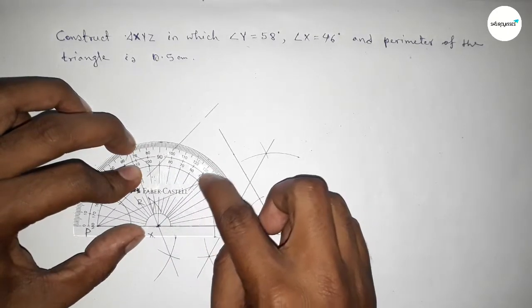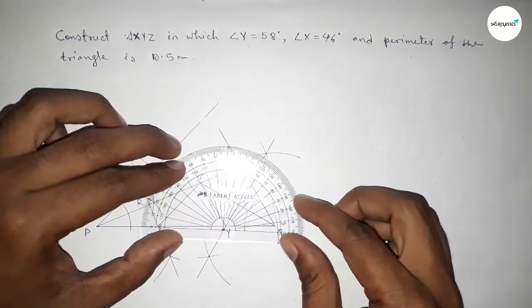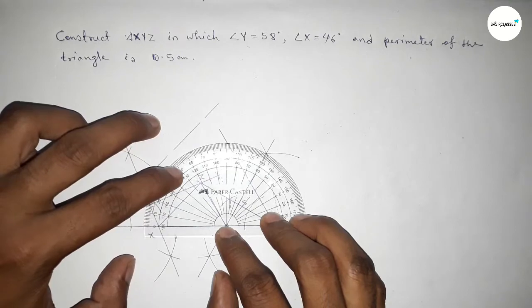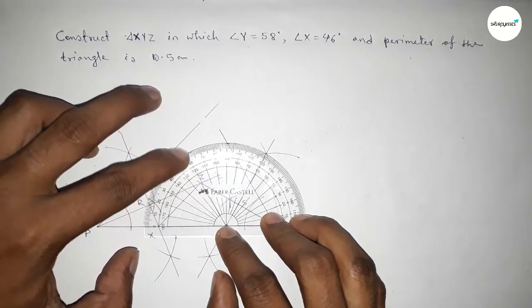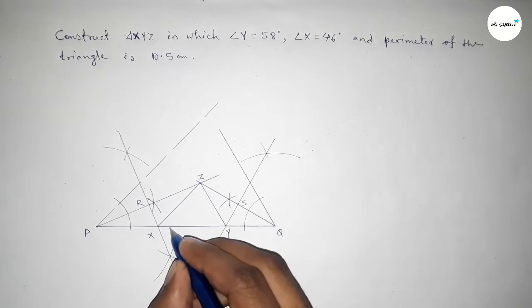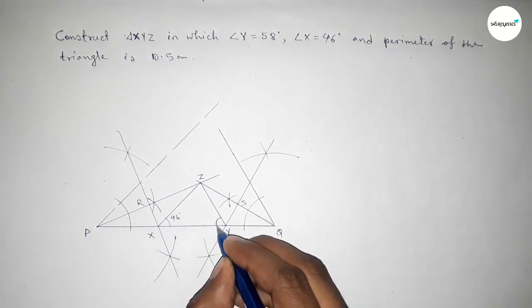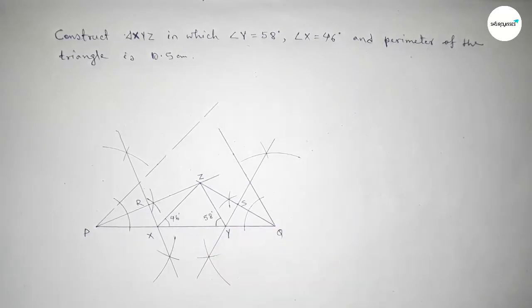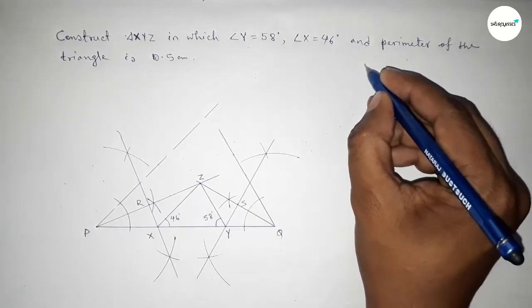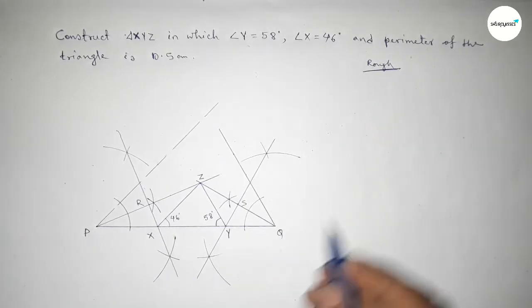This is our required triangle. Now checking angle X — this is 46 degrees, perfectly. And now checking angle Y — 58 degrees, perfectly. So angle X is 46 degrees and angle Y is 58 degrees.